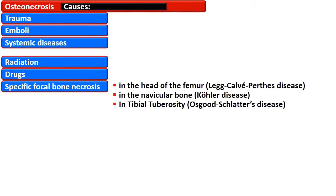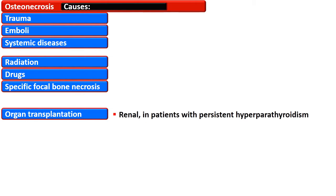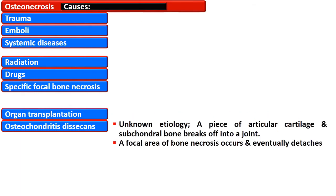There is specific bone involvement named as specific diseases, such as Legg-Calvé-Perthes disease, in which only the head of the femur is affected. In Kohler disease, the navicular bone is affected, while the tibial tuberosity is affected in Osgood-Schlatter disease. Organ transplantation is another cause, and it is common in kidney transplant, in which there is persistent hyperparathyroidism.